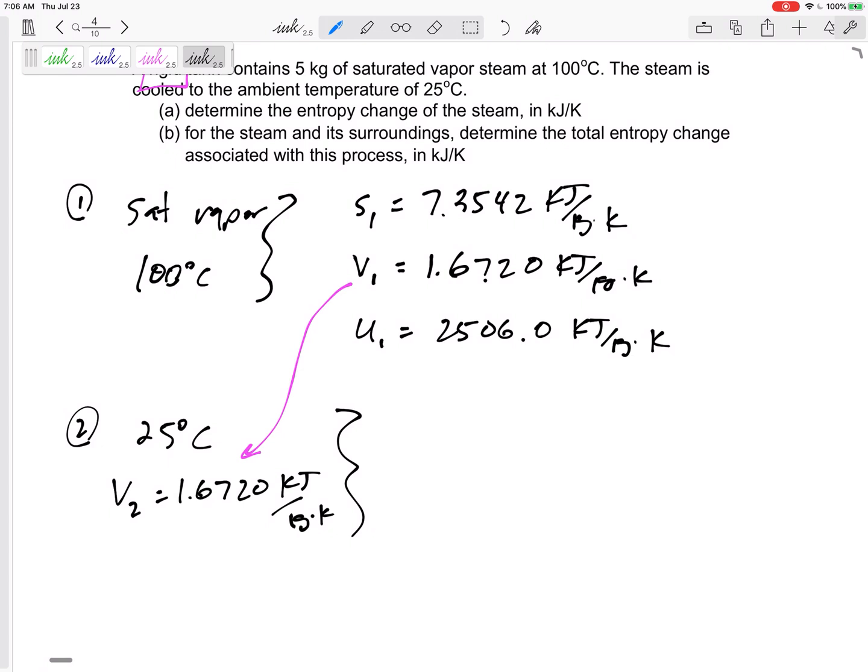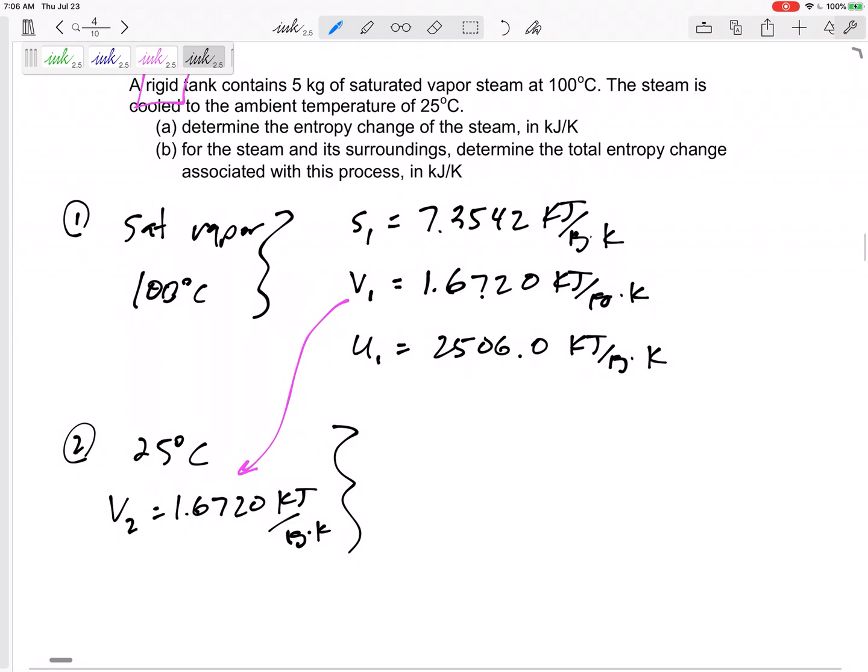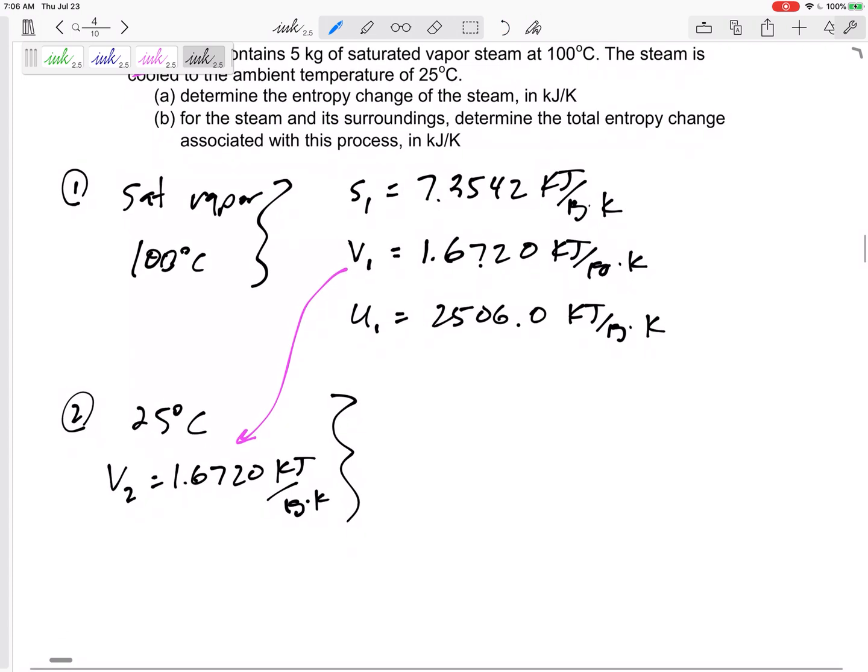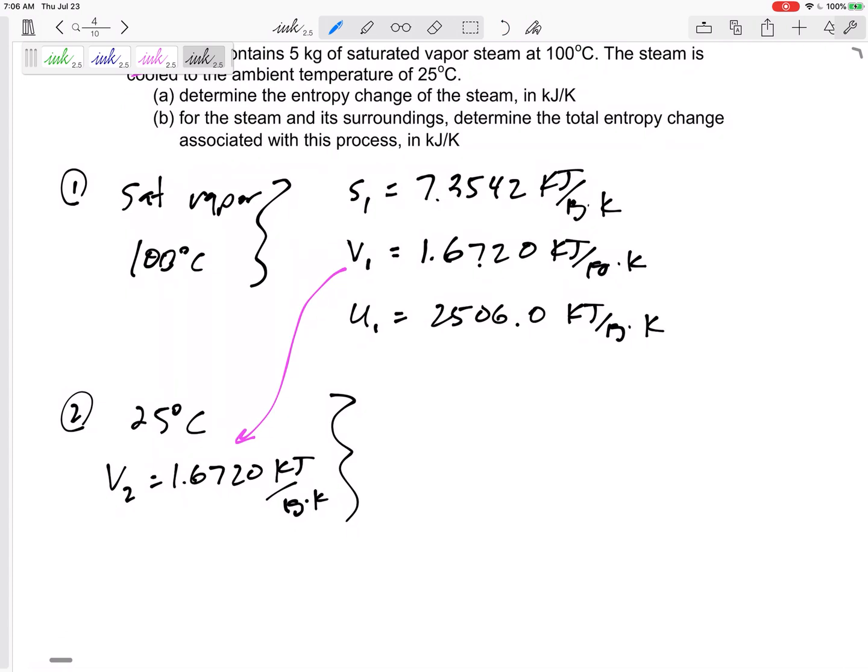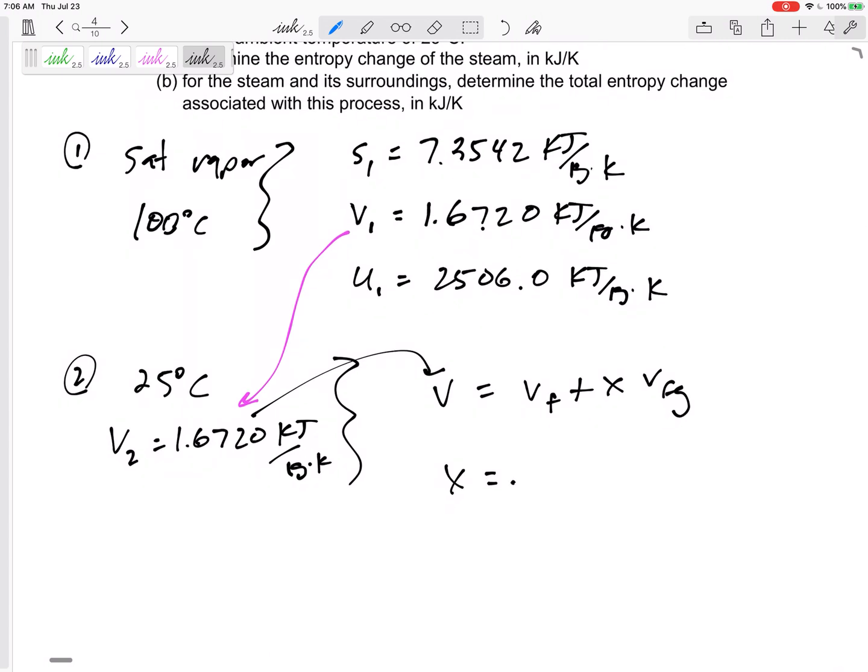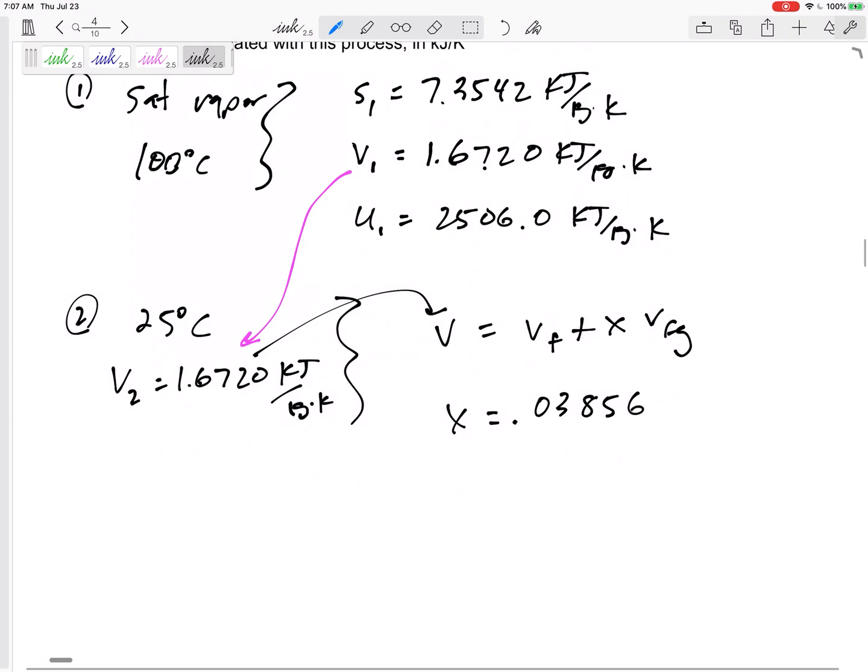Now if it has that temperature, that V, I would go to table A4, the temperature table. I would see: does this V lie between Vf and Vg? Yes it does. So if it lies between, I'd say that V equals Vf plus x times Vfg. I would solve for x. I've got an x of 0.03856.